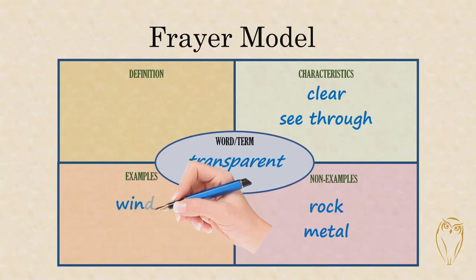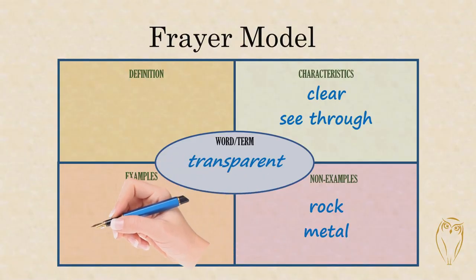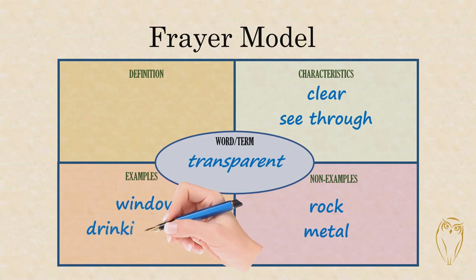The block next to it is where I'm thinking about examples for the word 'transparent.' Because I said transparent is something clear or I can see through, and non-examples are things like rock or a piece of metal, when I think about the opposite of that I start to think about things like windows or water — specifically drinking water, because muddy water I couldn't see through. So in this block on the bottom left, I'm going to write 'window' and 'drinking water' as my examples.